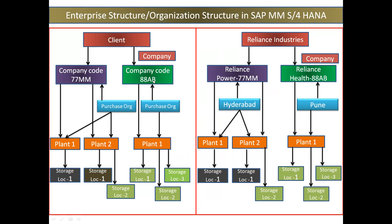Here we have taken the example of company code — I have taken the example of two company codes based on two industries. For Reliance Power and Reliance Health, they can have two different purchase organizations, or it can be one — it depends. And for every purchase organization, they will have the plant and they will have the storage location. This is the initial design of any enterprise structure.